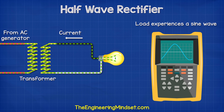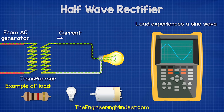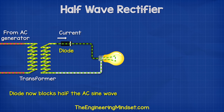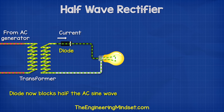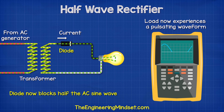The load could be anything from a resistor, a lamp, a motor, etc. If we inserted a diode, the diode will only allow current to flow in one direction, so the load now experiences a pulsating waveform. The negative half of the sine wave is currently being blocked.